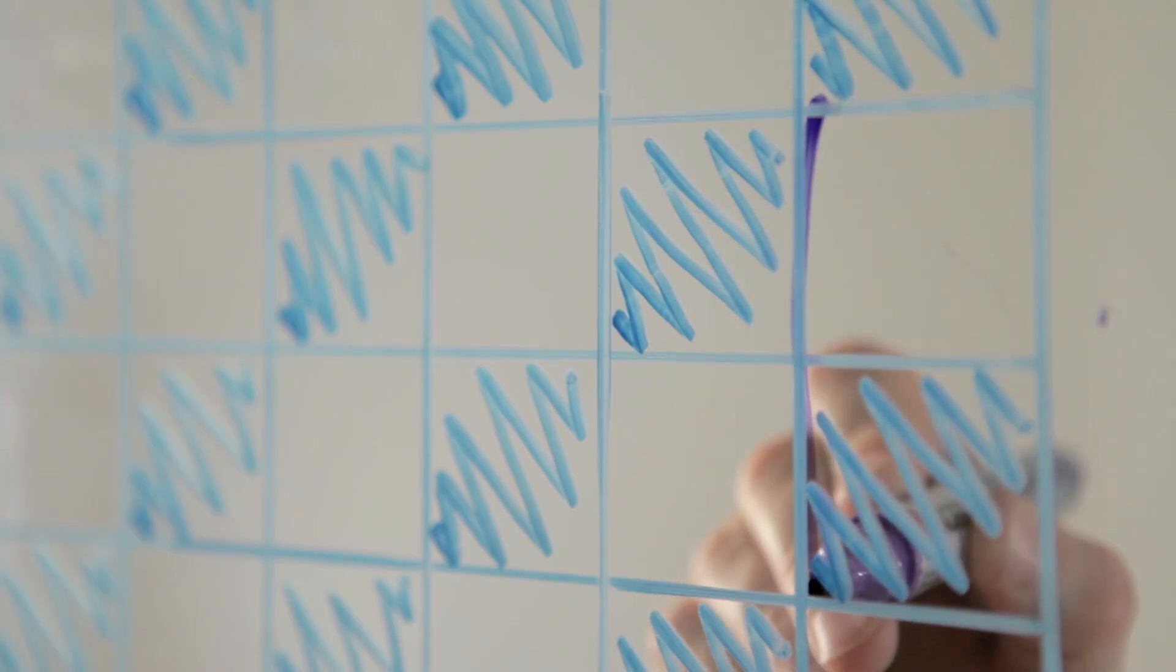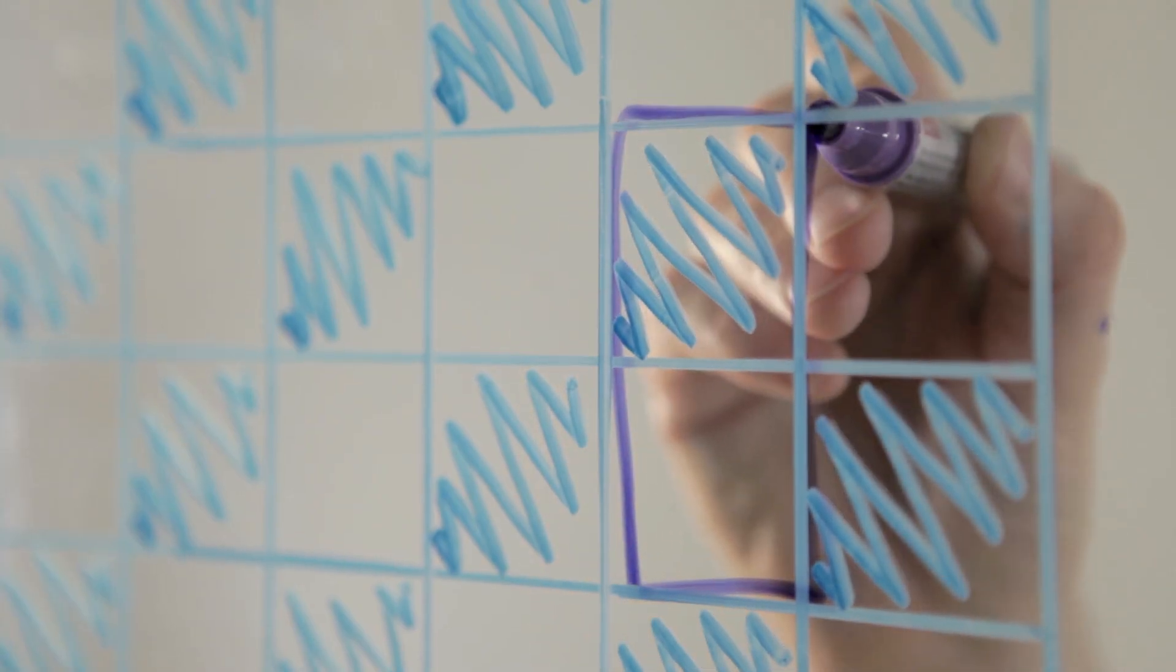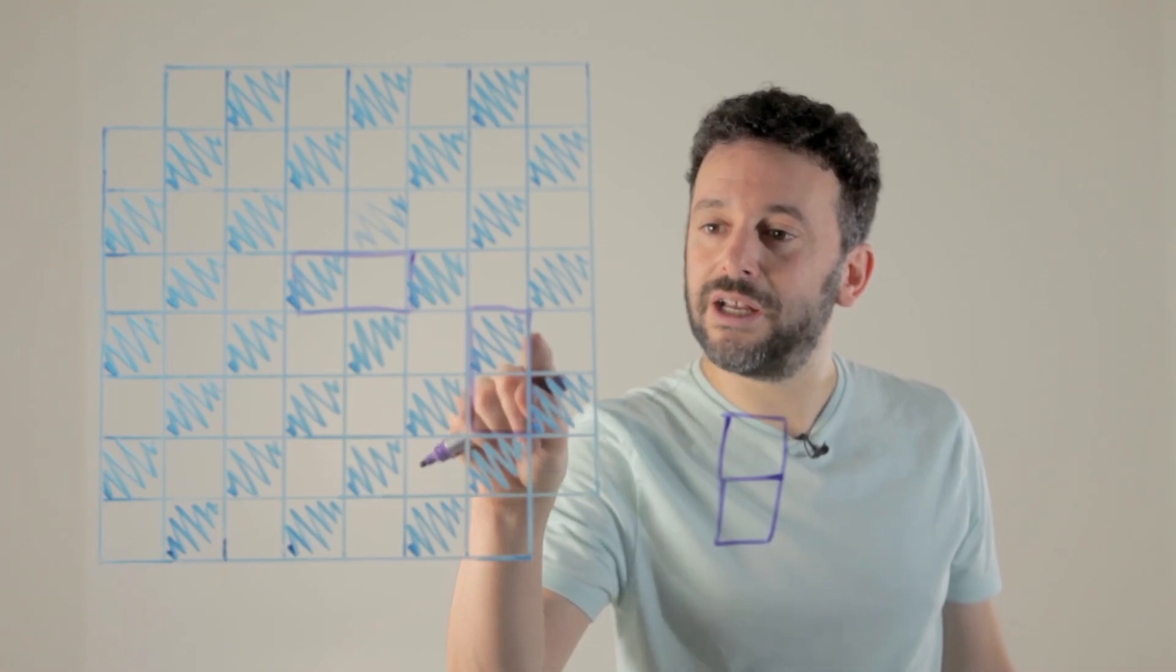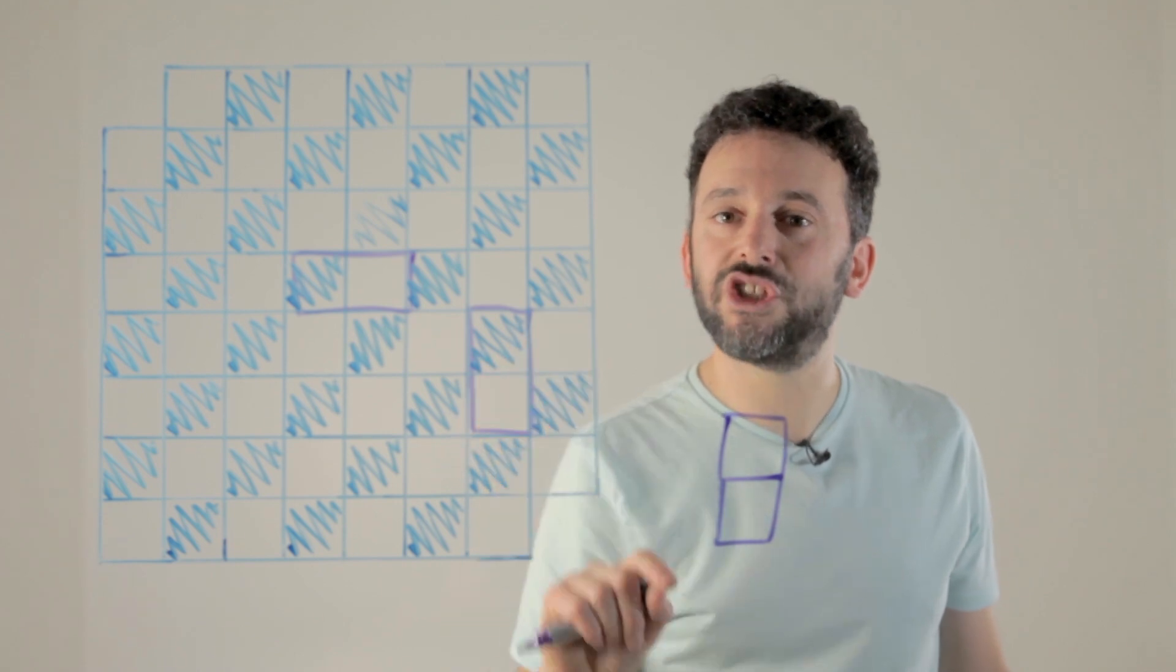And the answer is no we can't. And this is why. The first thing to realize is that whenever we put a domino on the board, like here or here, the domino will cover two squares, one of each color.